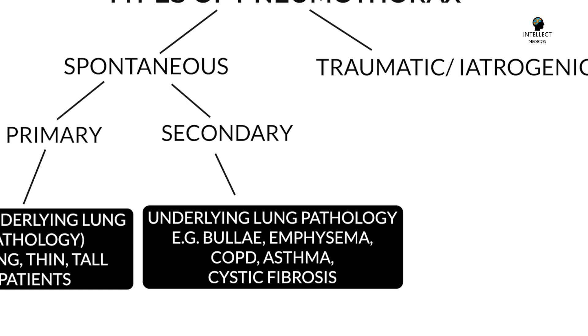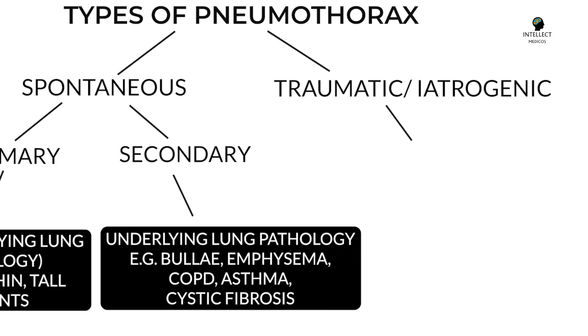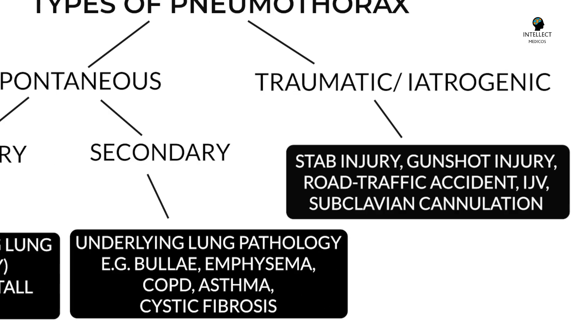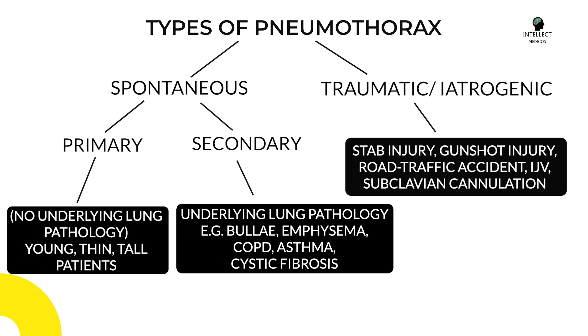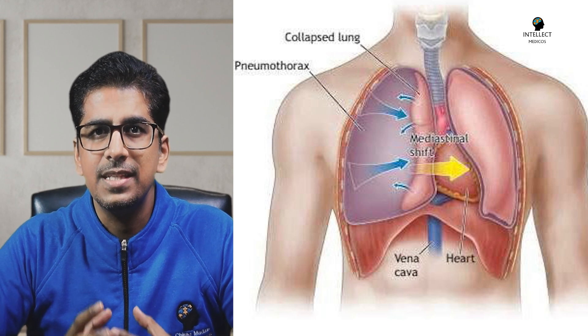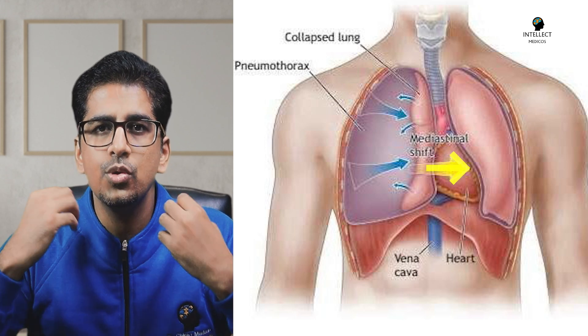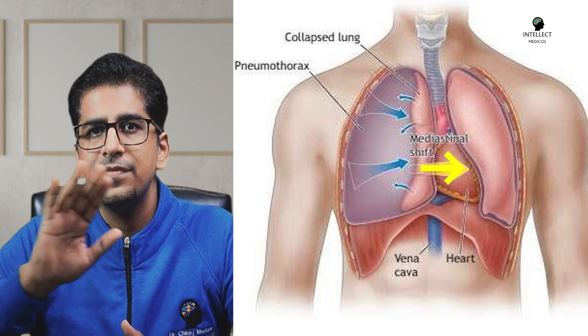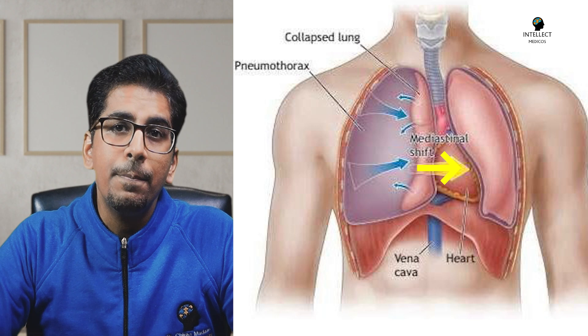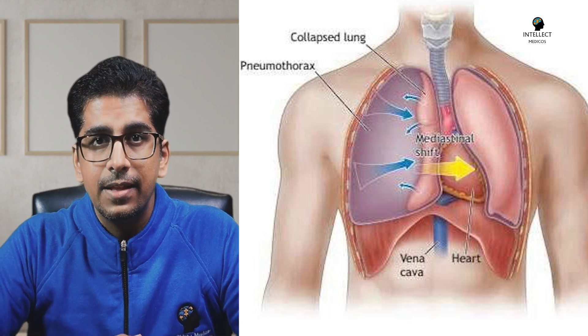On the other side, traumatic or iatrogenic pneumothorax includes cases of stab injury, gunshot injury, road traffic accident, or even after IJV cannulation. And whenever the abnormal accumulation of air inside the pleural cavity is so high that the pressure causes mediastinal shift or tracheal shift, compressing the heart or vascular structures and causing hemodynamic compromise, that is referred to as tension pneumothorax.